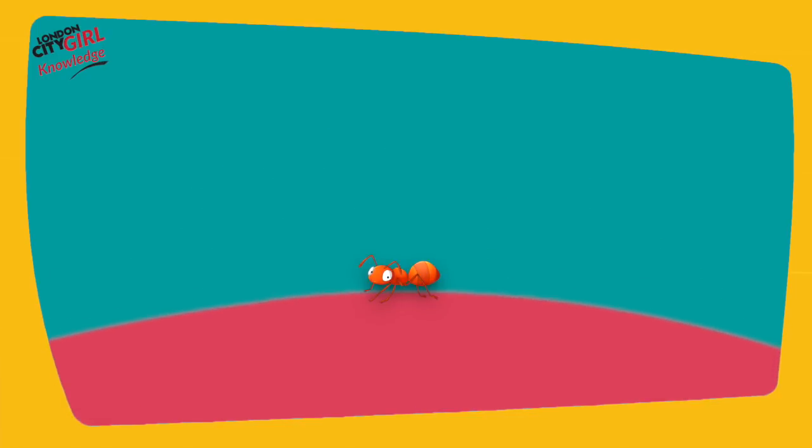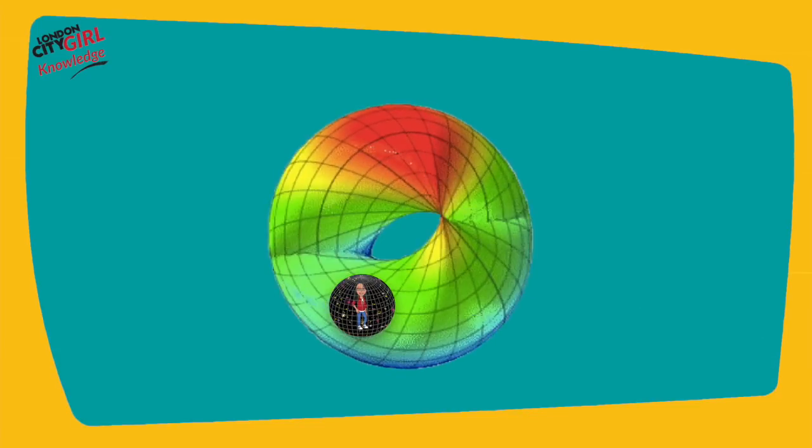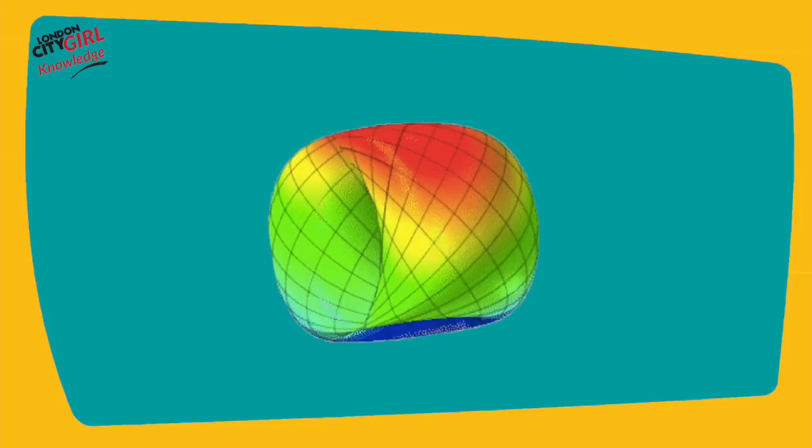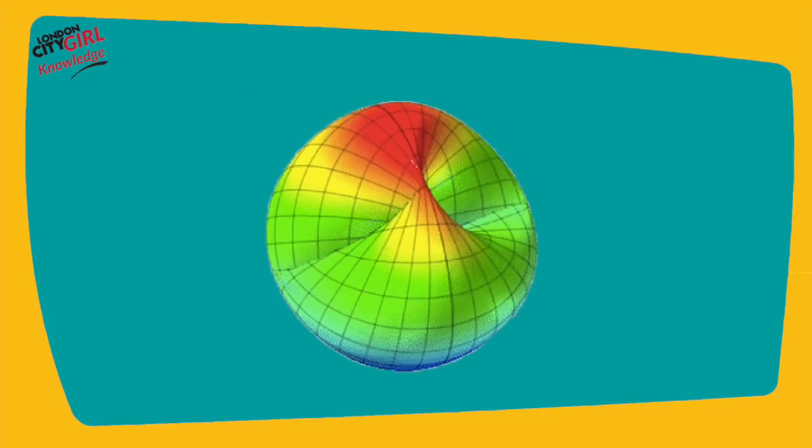Because the ant is so small, he thinks he is on a flat surface, even though we can see he's on a 3D round surface. Similar to that ant, we could be on a 3D surface of a finite 4D hypersphere that we can't perceive.